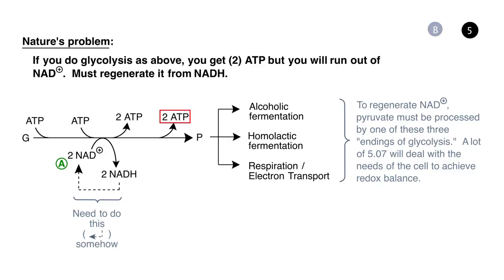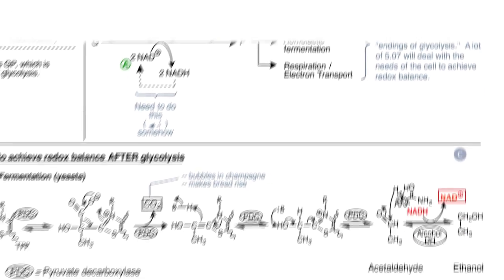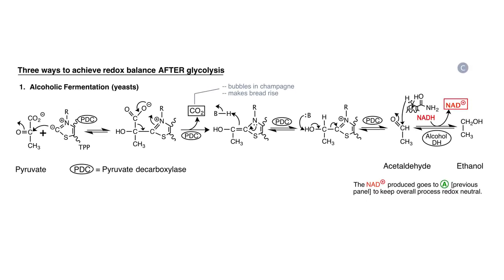Now we'll look at each of these mechanisms of NAD+ regeneration in detail. In addition to NAD+, you're going to have to generate a number of other products that can be useful to the cell. Let's look at panel C. Under anaerobic conditions, yeast will take pyruvate and convert it initially to acetaldehyde and then reduce the acetaldehyde to ethanol. These are the reactions of alcoholic fermentation.